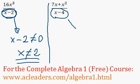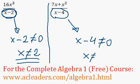Over here, x minus 4 cannot be equal to 0. So x cannot be equal to 4. That's it. Again, just a quick recap.